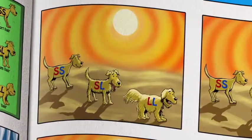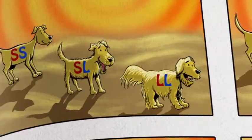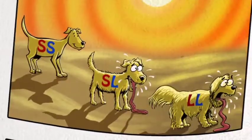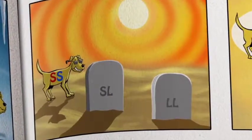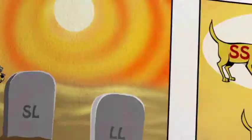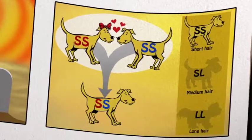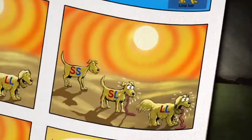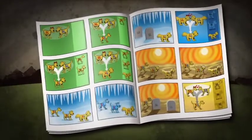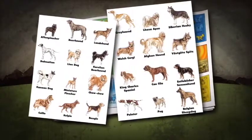If they move towards a hot climate, those with long hair and medium hair overheat and they die. And now you're only left with dogs with S genes who will only ever produce dogs with S genes. And so over time, through natural selection and adaptation, you can form all these distinct species of dogs, but they're still 100% dogs.